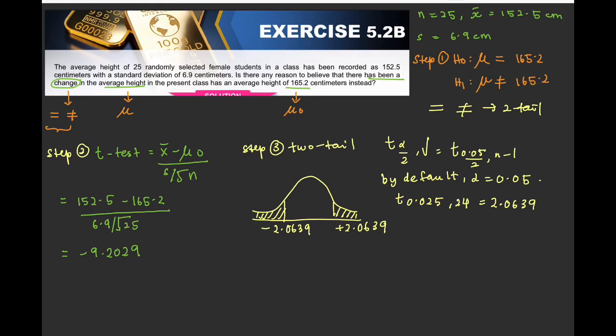Step number 4, in the shaded region or in unshaded region. So negative 9 is here. Negative 9.2029 is less than negative 2. So it is in the rejection region. So you have to reject H now.